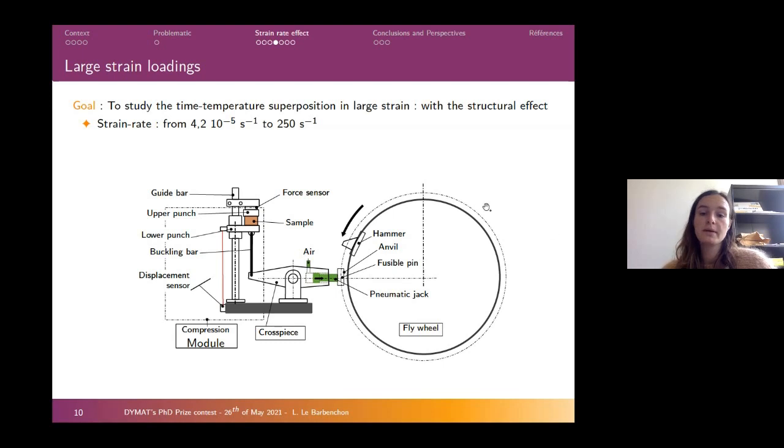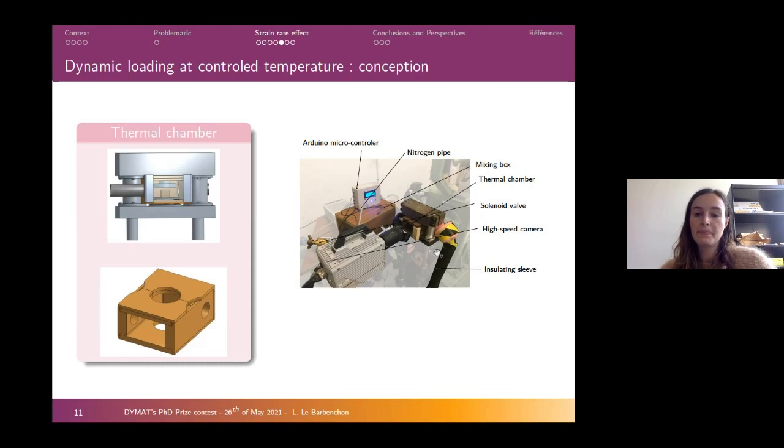For that we used a flywheel that you can see here, which is a really heavy wheel that turns, and then the hammer can smash here the crosspiece and induce compression of our samples at relatively constant strain rate. But now, in order to study the time-temperature superposition, we have to control the temperature too. That's why I conceived a new setup to make dynamic tests at controlled temperature. I had to conceive a really small thermal chamber around the compression area, and an Arduino microcontroller was here to set the temperature either with nitrogen or with resistance.